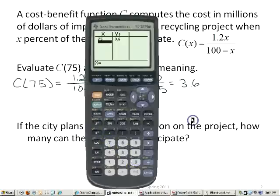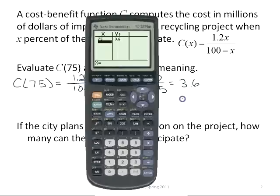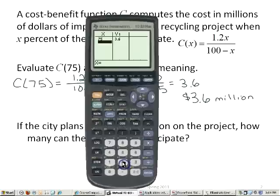If 75% of the people participate, I get 3.6, which means 3.6 million dollars is what it would cost to implement it, and 75% of the people would be participating. If only 25% of the people participate, the cost would only be .4 million dollars, or $400,000. So I'm going to put any number. If I want to see what 90%, if 90% of the people participate, it's going to cost $10.8 million dollars.